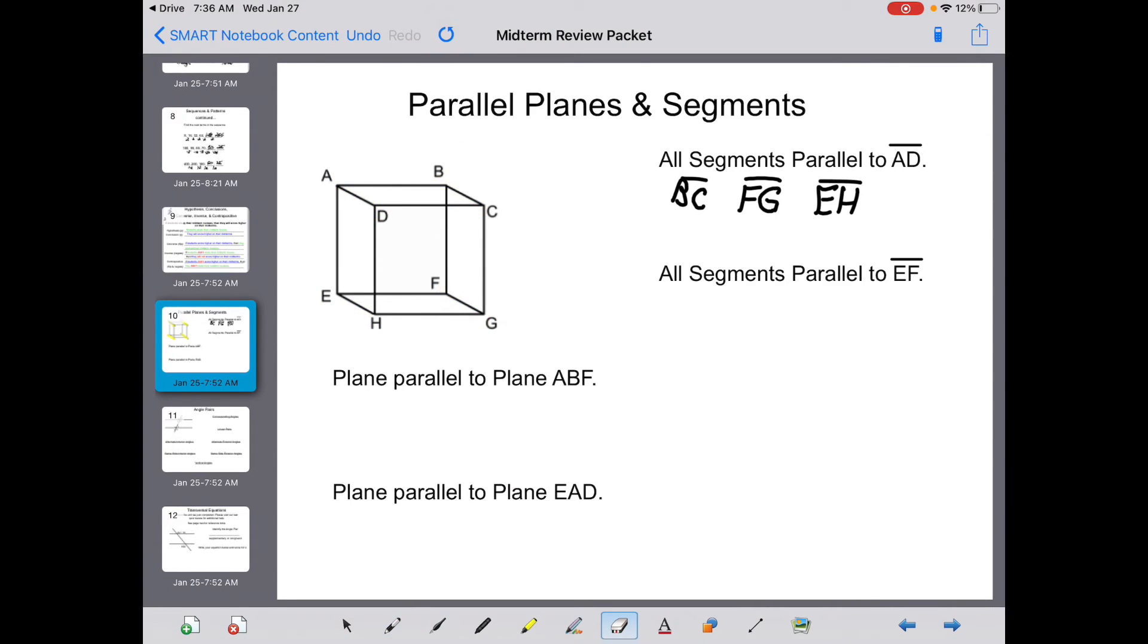Next part says all segments parallel to EF. Well, EF, DC, AB, and HG are all parallel.